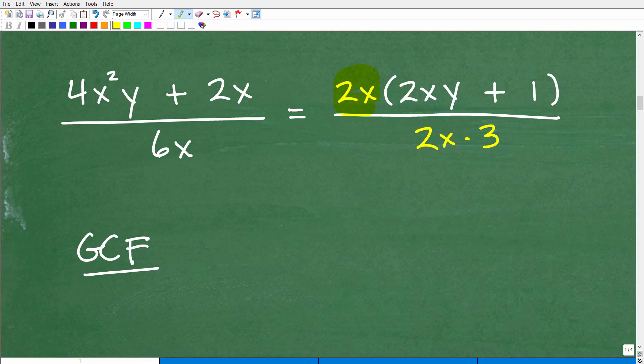And in this particular problem, this numerator right here, 2X is the greatest common factor. So 2X parenthesis, 2XY, okay, if I take this 2X and multiply by 2XY, I'll get back to 4X squared Y, okay? And then this 2X times that one will get me back to 2X. So you have to know how to factor in order to simplify. And then 6X we can think of as 2X times 3. That's 6X.